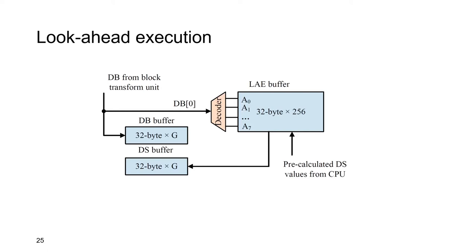The hardware implementation of lookahead execution is very simple. We first calculate all possible values of digest S on the CPU and store them in the lookahead execution buffer. Once the calculation of digest B is finished, db0 is used as the address to access the buffer. Then the corresponding value of digest S is read out and stored in the digest S buffer. By using lookahead execution, the calculation of digest S is skipped on the hardware, and the randomness of the execution path is removed.